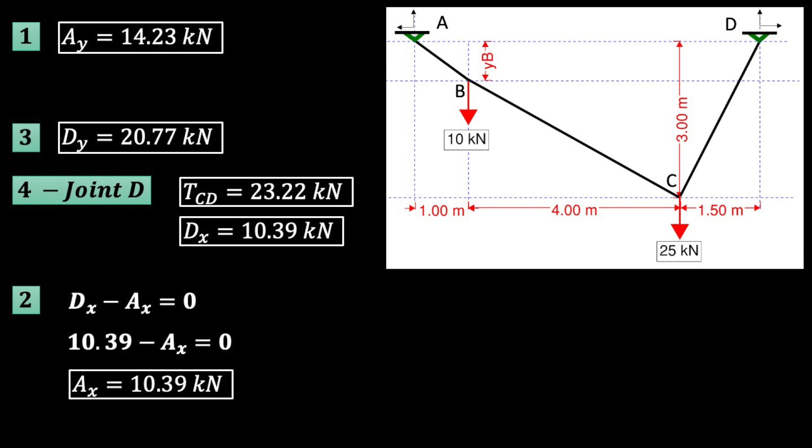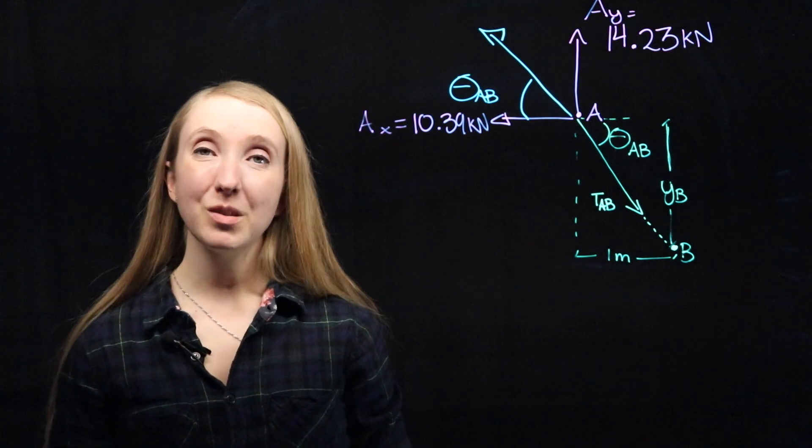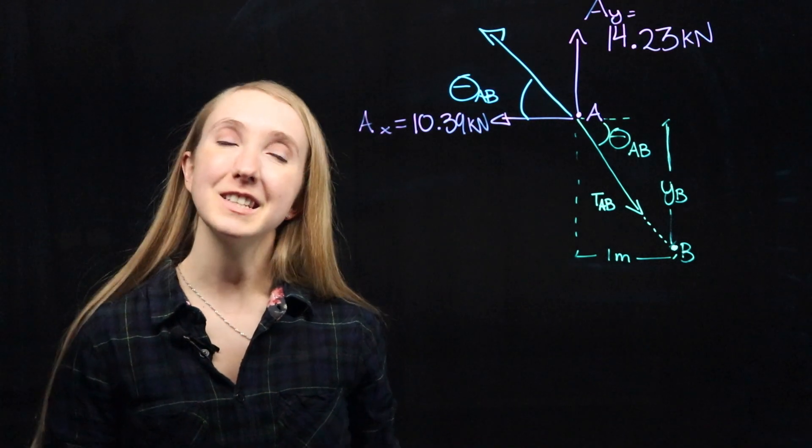Now that we know Ax and Ay, we can go to joint A and do the same thing we did at joint D. This time, it will help us find YB. At joint A, we're going to do the same thing that we did at joint D.